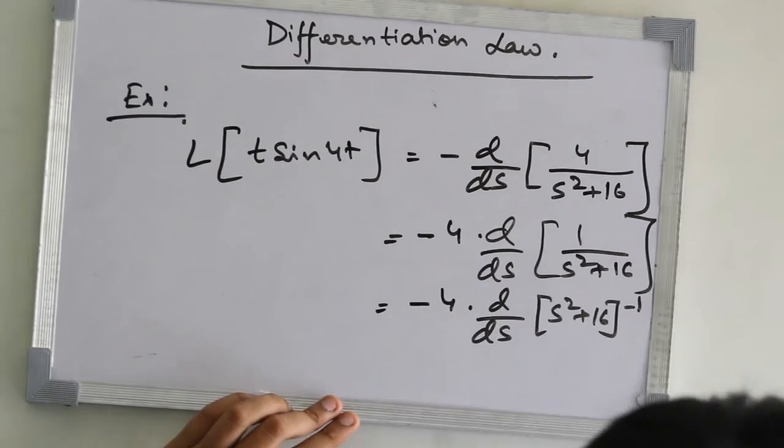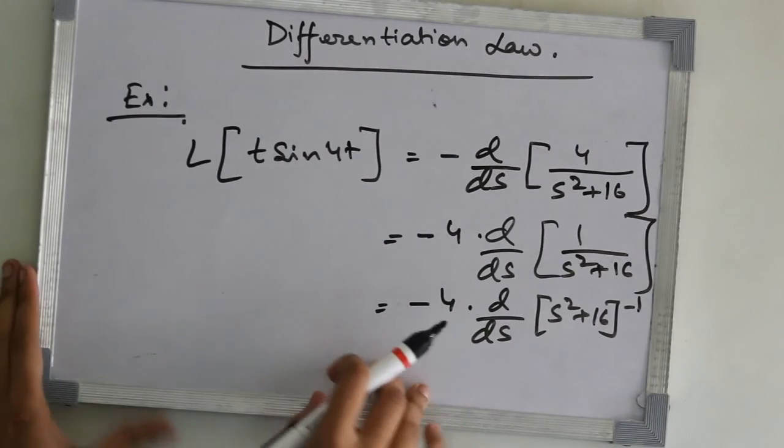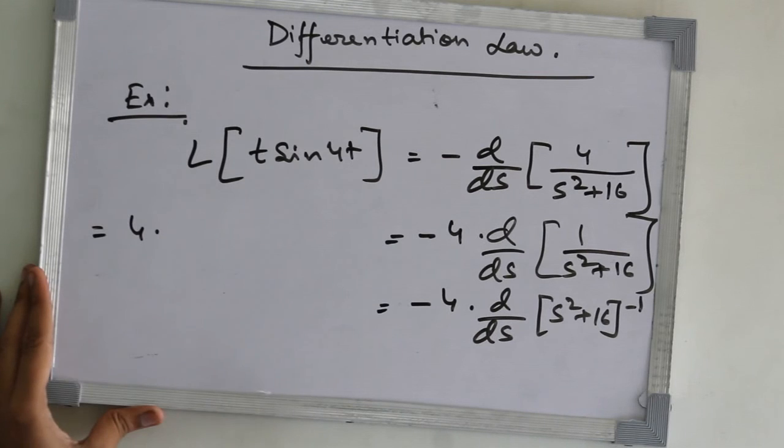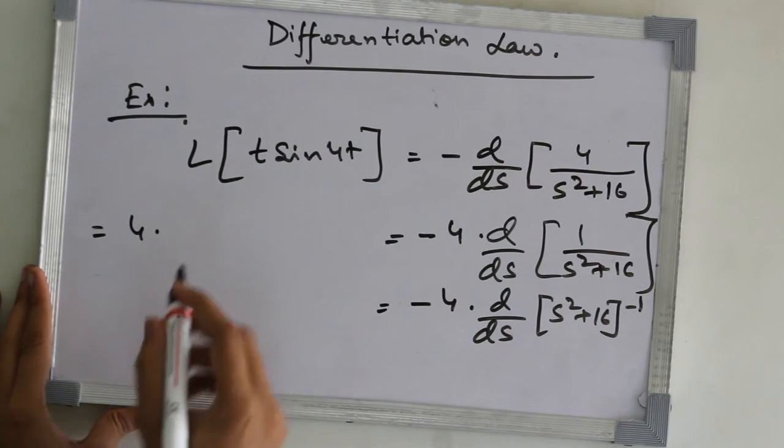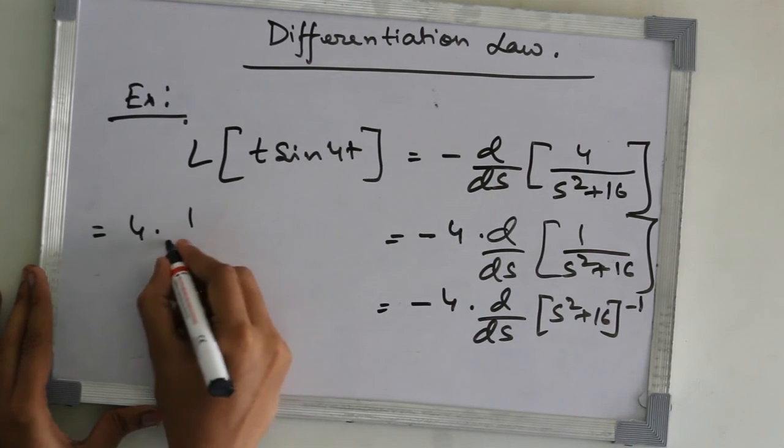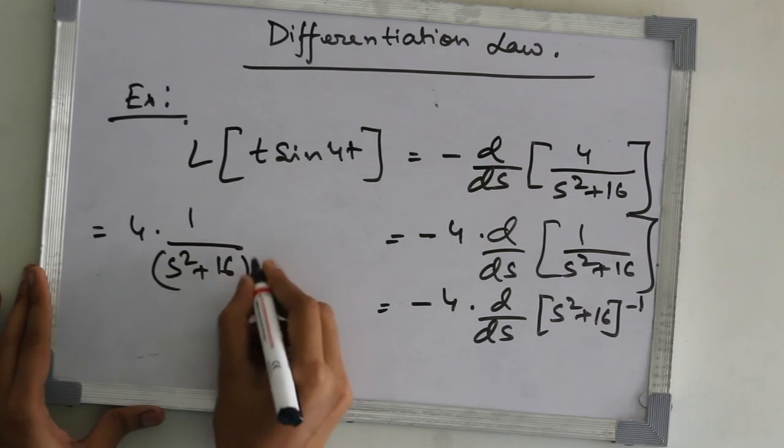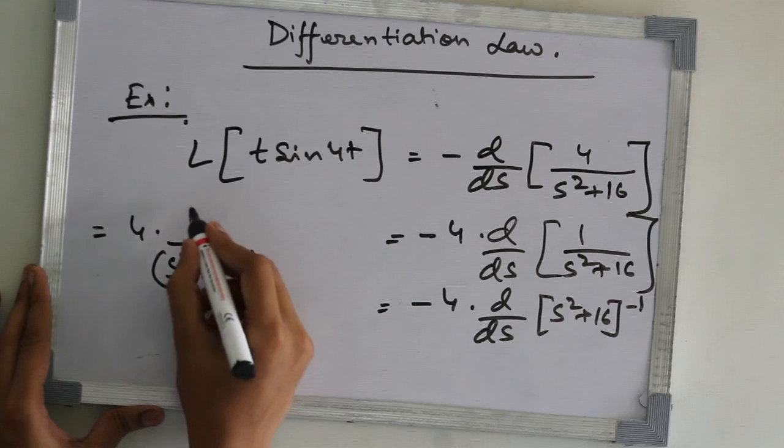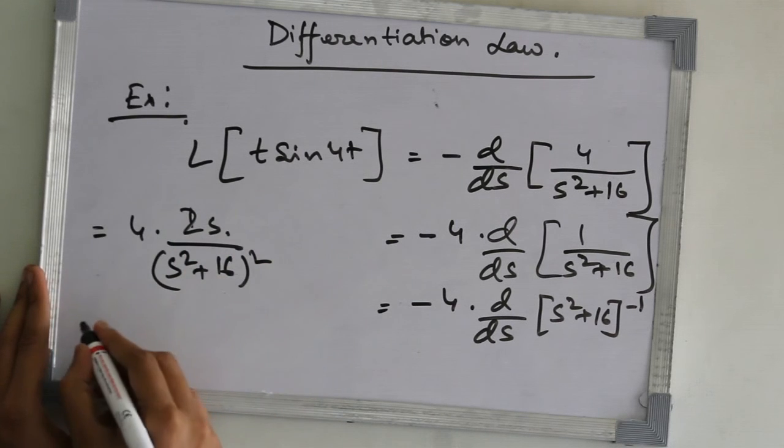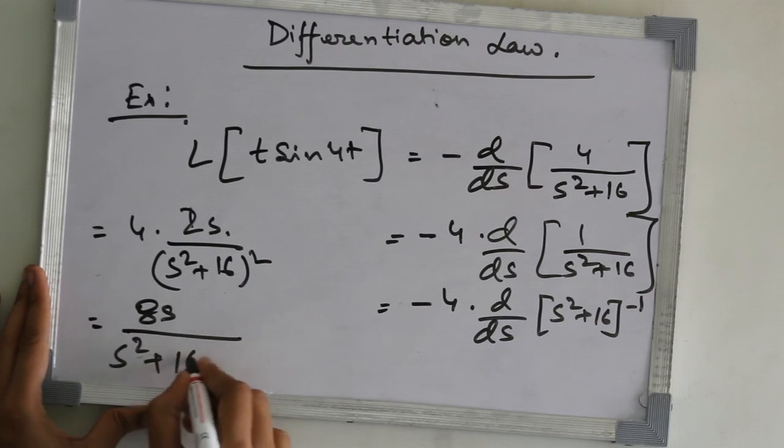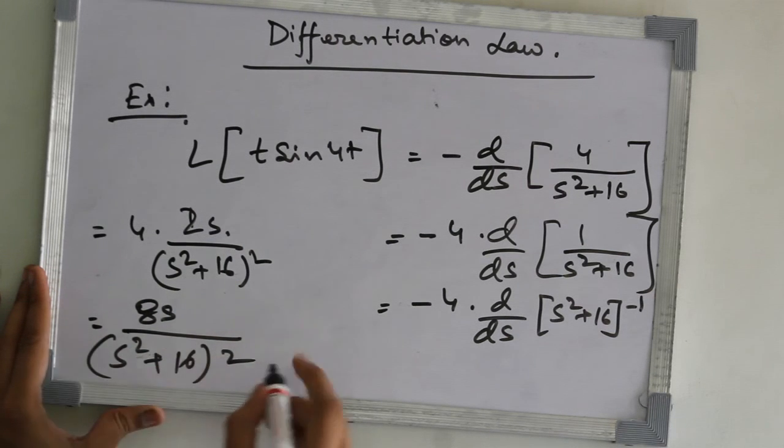So, we will get, this is equal to 4 into 1 upon s squared plus 16 whole squared into 2s. This means 8s upon s squared plus 16 whole squared. This is the final answer.